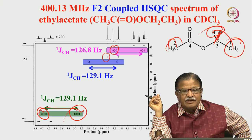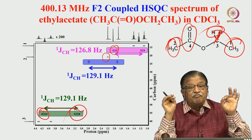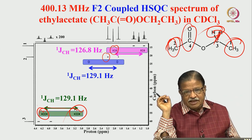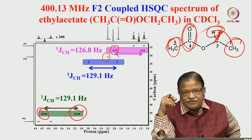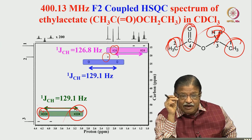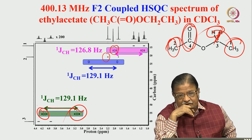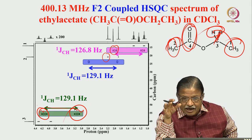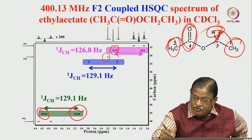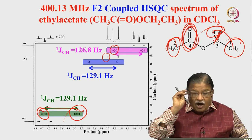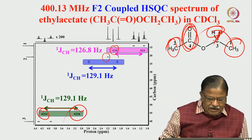The CH3 attached to the C=O is simply a doublet. You may ask why there is no peak for the carbonyl carbon — in all correlation experiments, only carbons attached to protons give cross peaks. Quaternary carbons and CO carbons give no HSQC peaks. As a consequence, only 3 peaks are seen and the CO carbon is missing. To detect that carbon, another experiment — HMBC — is required.